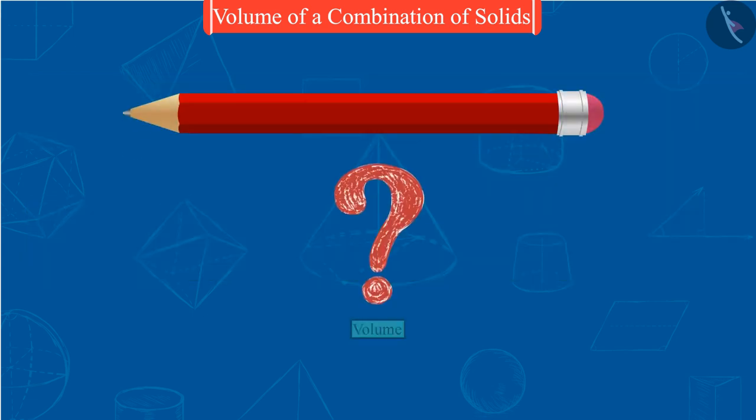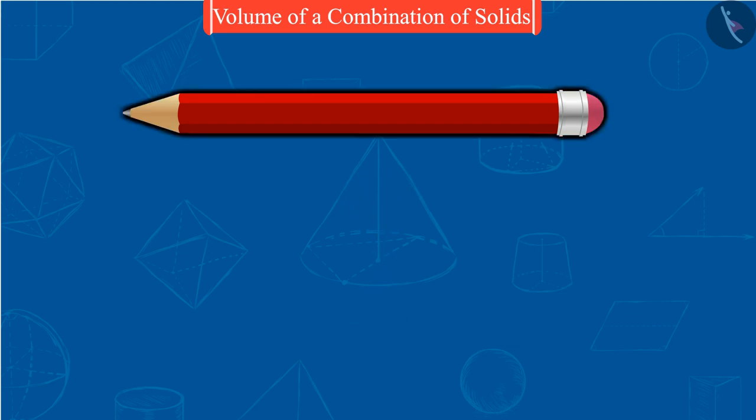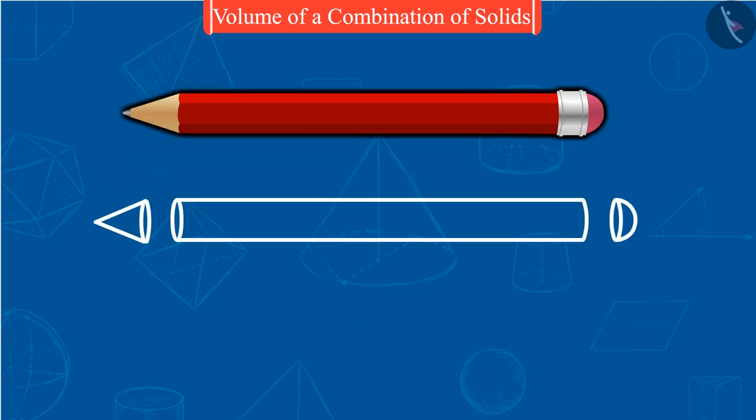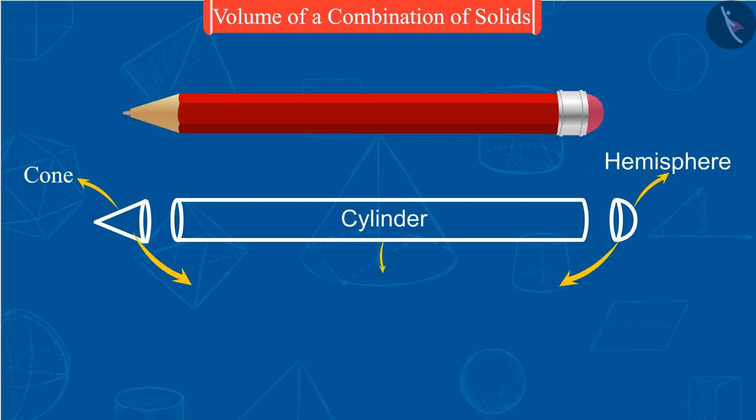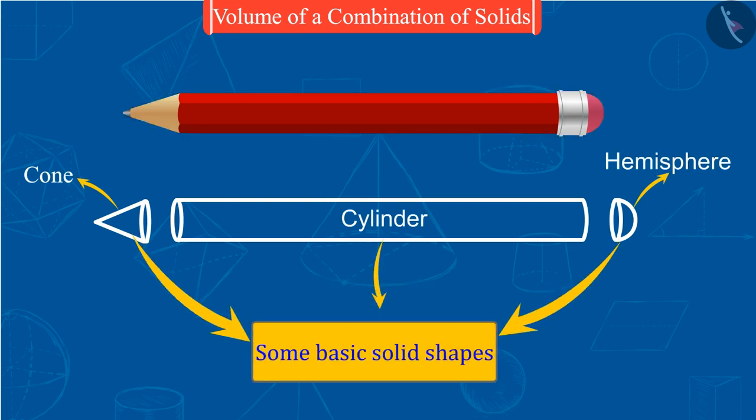Can you find out the volume of this pencil? Which method would you use to do this? On looking at this pencil carefully we observe that this pencil is not a specific shape but is formed by a combination of some basic solid shapes.